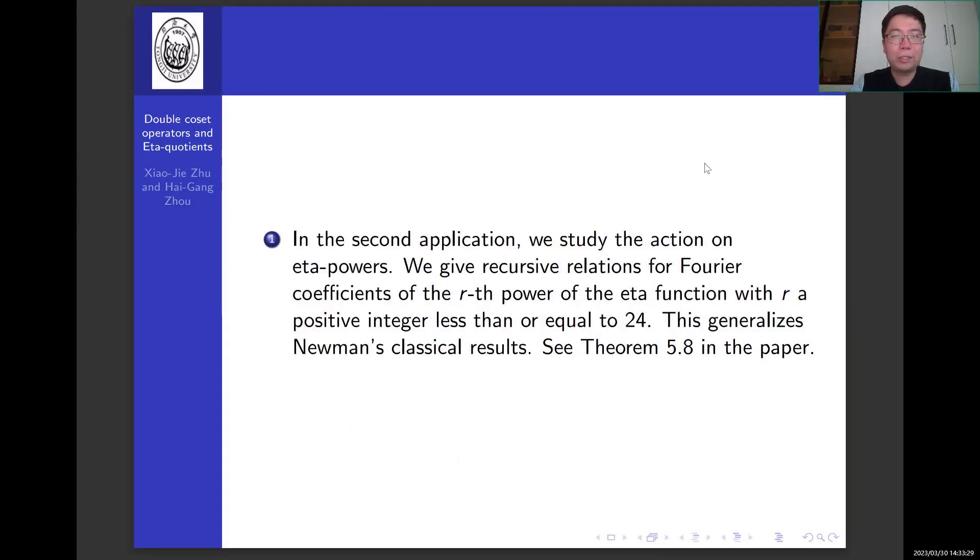In the second application, we study the action on eta powers. We give recursive relations for Fourier coefficients of the r-th power of the eta function with r a positive integer less than or equal to 24. This generalizes Newman's classical results. See theorem 5.8 in the paper.